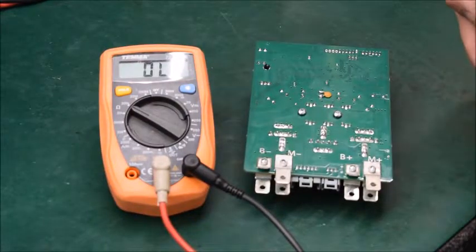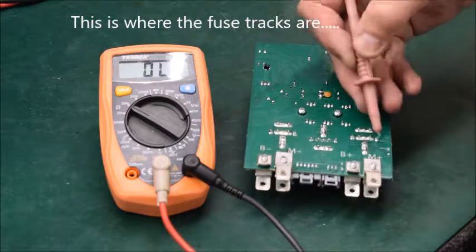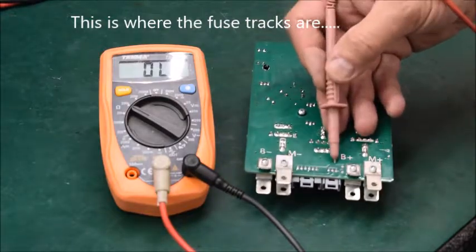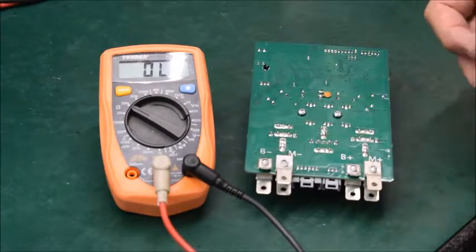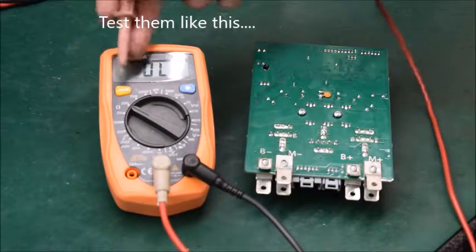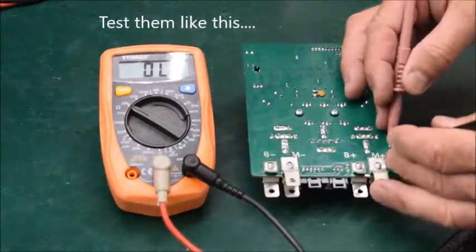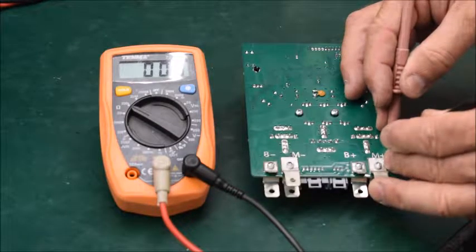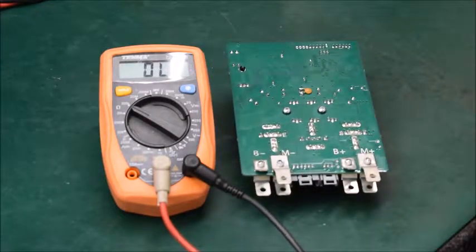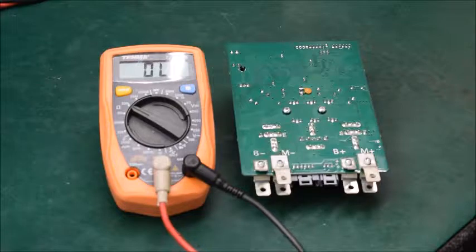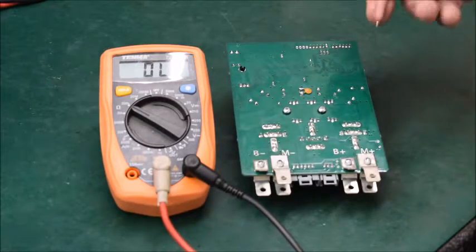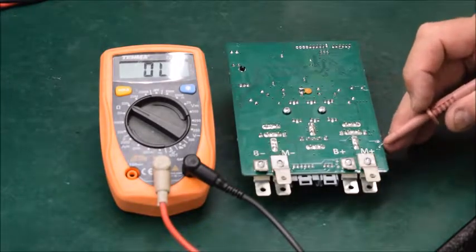Whilst we are here I will also show you the position of the fuse tracks. They are here and here. You can test them electrically by switching your multimeter to the resistance scale and then measuring across these points.